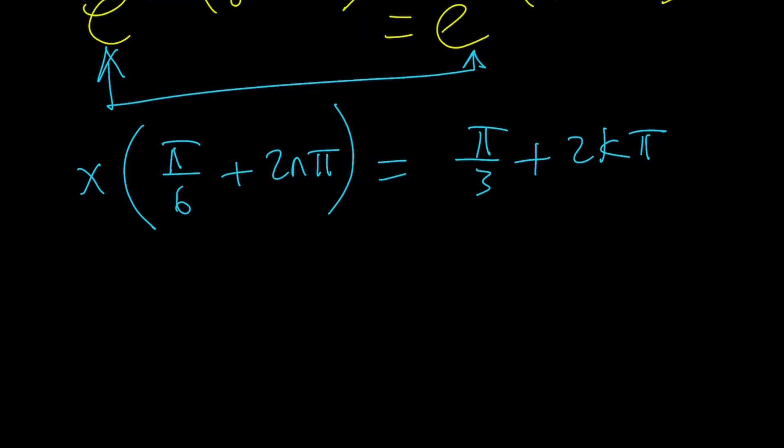So this part is the easiest. We basically divide both sides by π/6 + 2nπ to get x by itself. So x equals (π/3 + 2kπ) / (π/6 + 2nπ). Again, k and n are integers. I don't know if I said that before, but that's what they are. And we get the answer. You could leave it like this, but a lot of times it's better if you simplify the answer. And when you simplify the answer, you're going to see something very different looking. So you'll be surprised, I think.